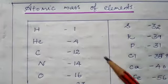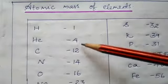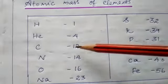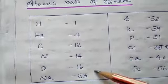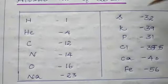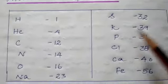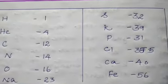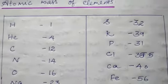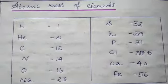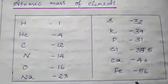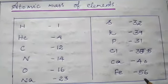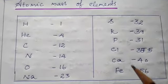We can see the atomic masses of some elements. Hydrogen 1, helium 4, carbon 12, nitrogen 14, oxygen 16, sodium 23, sulfur 32, potassium 39, phosphorus 31, chlorine 35.5, calcium 40, and iron 56. These are the atomic masses of some of the important elements. You should learn at least these atomic masses.